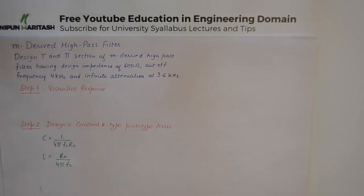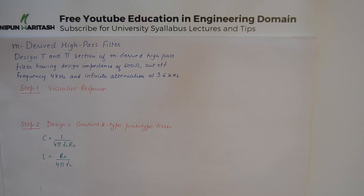Hello friends, welcome to the third tutorial on m-derived high pass filter in the series of network analysis and synthesis. By this time we know the basic understanding of why we design an m-derived filter out of a constant-k filter. Now we need to design a T and Pi section of an m-derived high pass filter in this tutorial, and we've been given the design impedance, the cutoff frequency, and the infinite attenuation frequency.